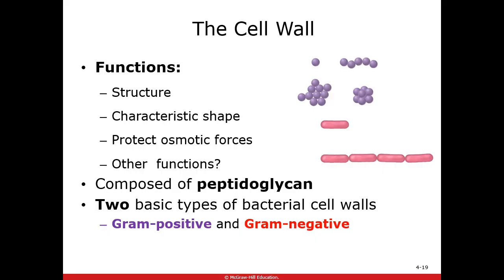We ended last class at the cell wall. Prokaryotic cells do have a cell wall, and so do some eukaryotic cells — plants do, some fungi do, but our cells don't. About half of all bacteria have what we call a gram positive cell wall, and about half have a gram negative cell wall.